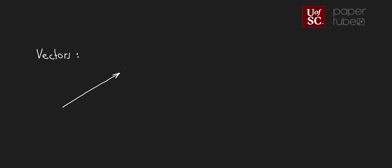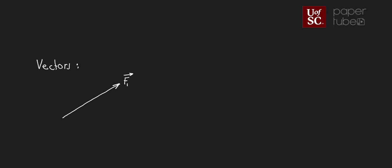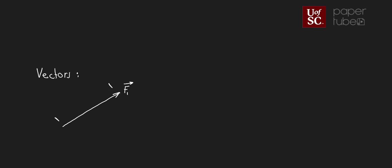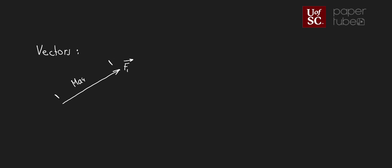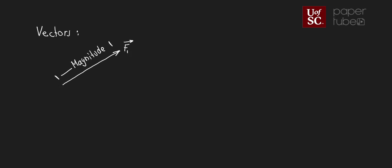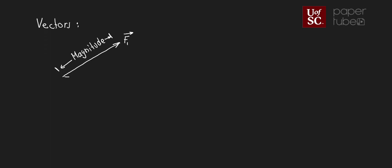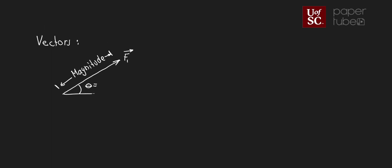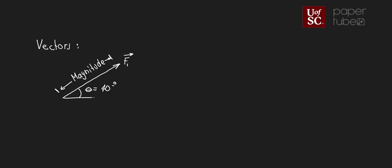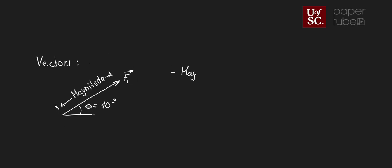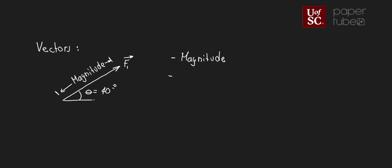Vectors are represented with an arrow. For example, we might have vector F1 representing a force, and it's going to have a magnitude — represented by the length of that line — and also a direction. The direction is often represented with angles; for instance, the vector might be at 40 degrees with respect to the horizontal. So vectors have both a magnitude and a direction.